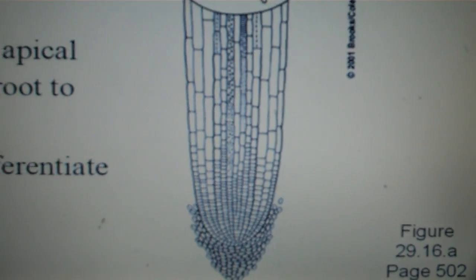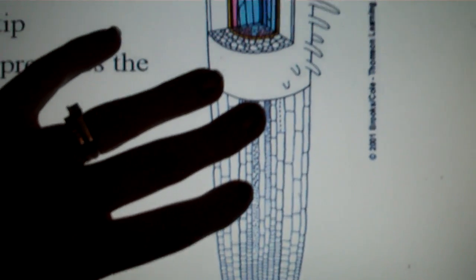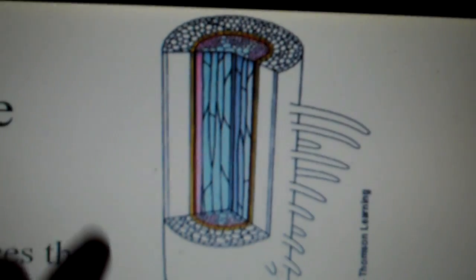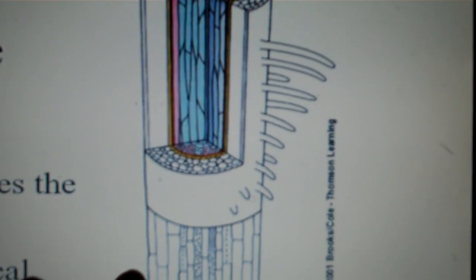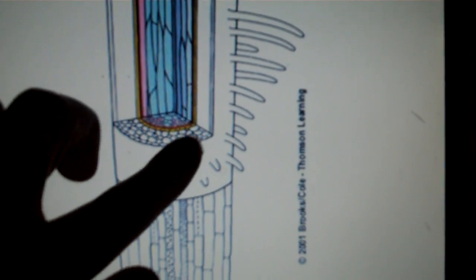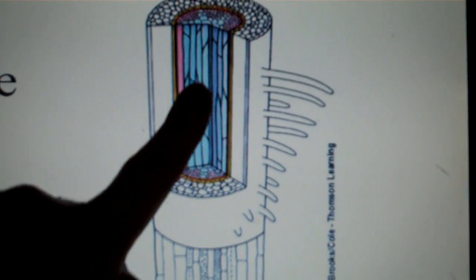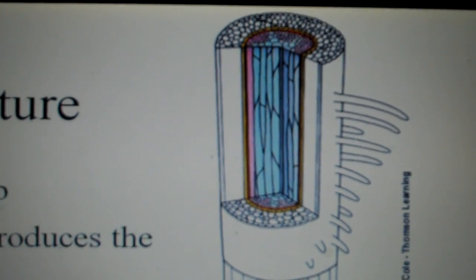Now further up, these cells are going to differentiate and become different parts of the plant. You can see here in the plant we have the epidermis, the dermal tissue on the outside. We have the ground tissue. Right here we have the cortex. And then we have the vascular tissue, the xylem and the phloem on the inside of the root, forming the vascular cylinder.